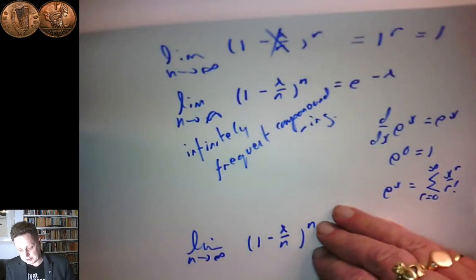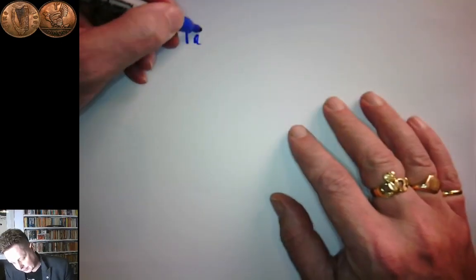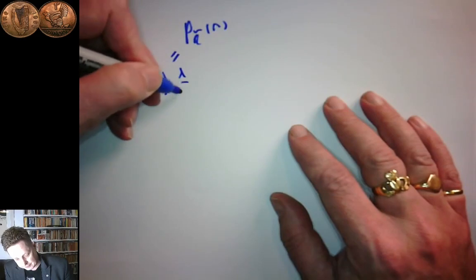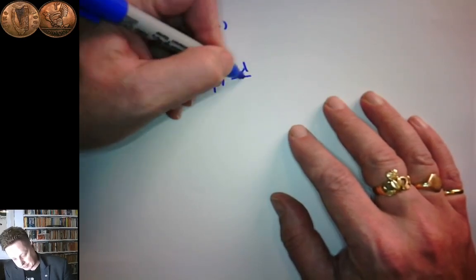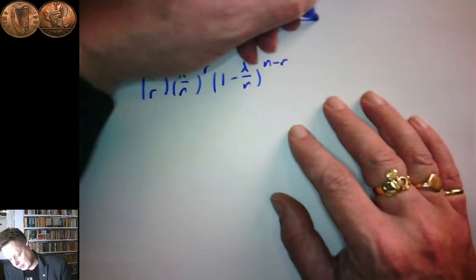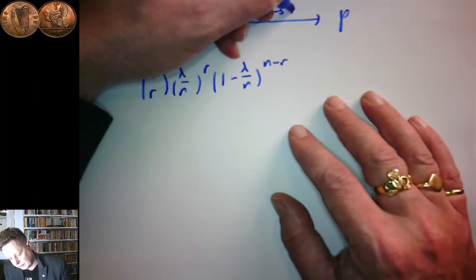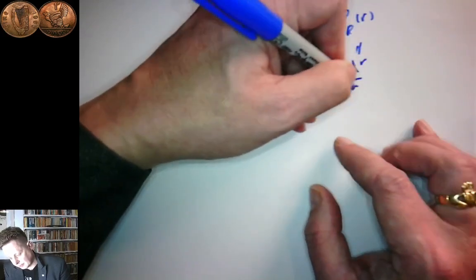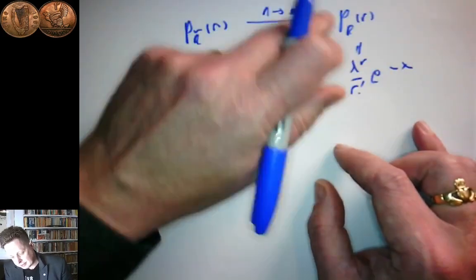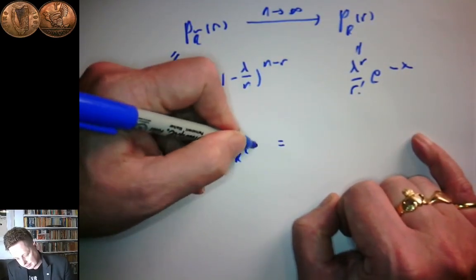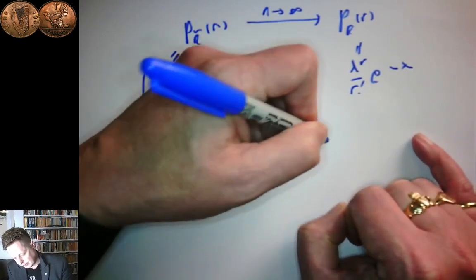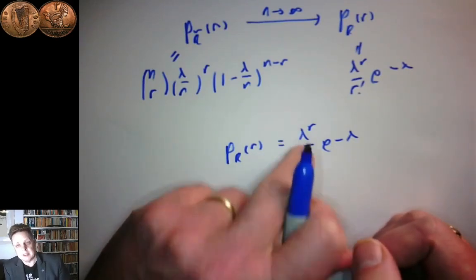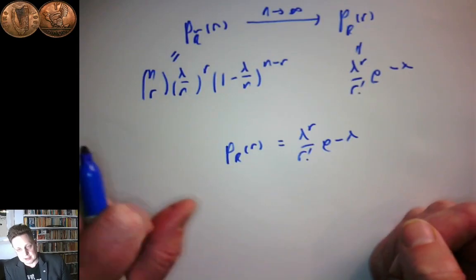So putting all of that together: we started with P(r̃ = r) = n choose r times (lambda/n)^r times (1 − lambda/n)^(n−r), and we're saying that as n → ∞, this approaches P(r) = lambda^r / r! times e^(−lambda). And that is the Poisson distribution. So P(r) = (lambda^r / r!) e^(−lambda) gives the probability that during the Poisson process, if the average number of events is lambda, you'll get exactly r events.